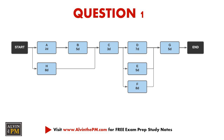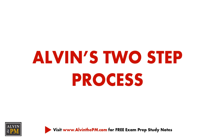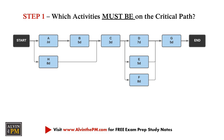Let me share with you my simple two-step process that eliminates all of this hassle and makes it so much easier to solve. First, identify which activities must be on the critical path — meaning, no matter which path it is, it will always be on the critical path.